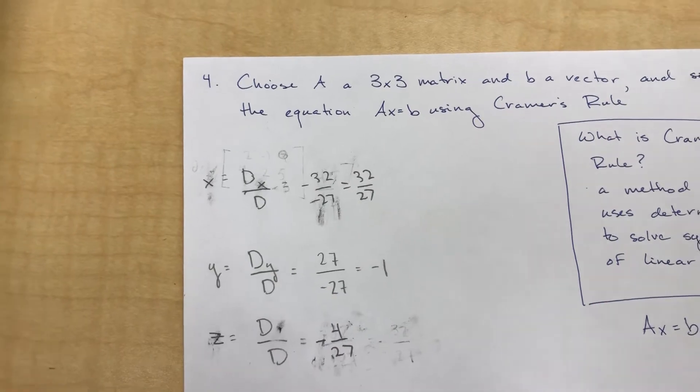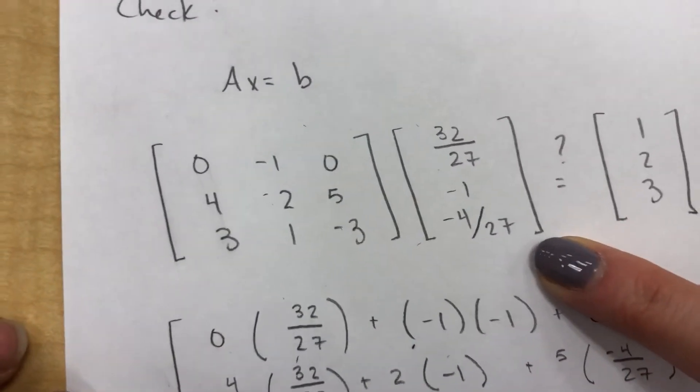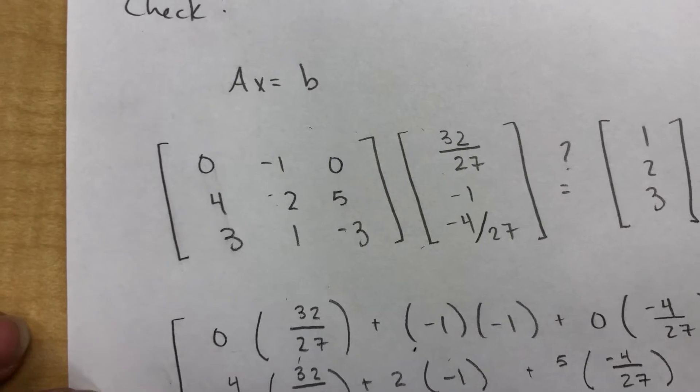So our final vector was 32 over 27, negative 1, and negative 4 over 27.